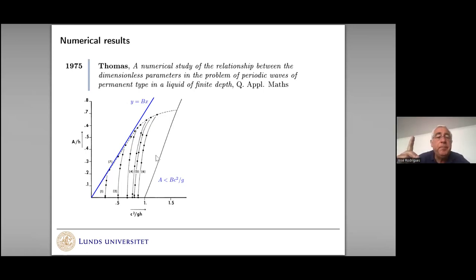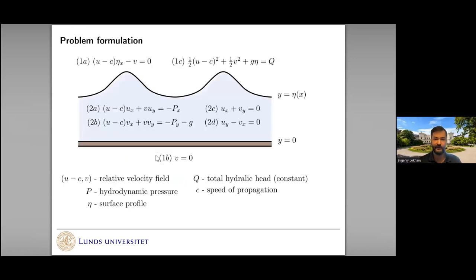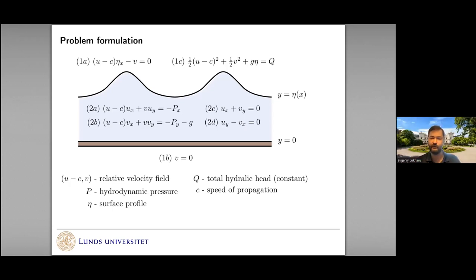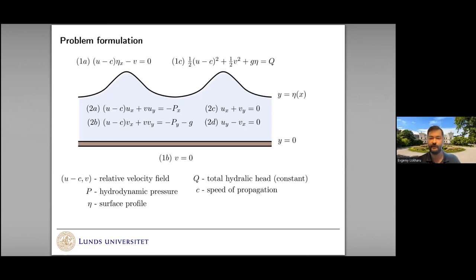Question: In your problem you have at least one parameter Q — how does the solution depend on variation in this parameter? Is there continuous dependence? Answer: We have here a constant Q, but for a given constant Q and even a given mass flux, there are many solutions to the problem — it is not unique. There is no local uniqueness either. So you have bifurcation? Yes, we have bifurcation and turning points, definitely.